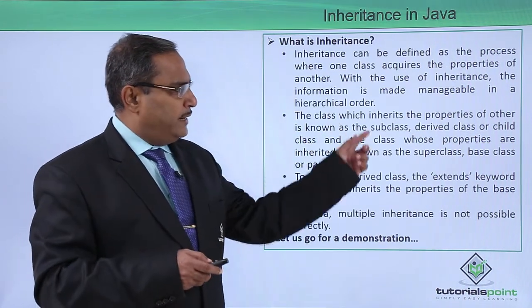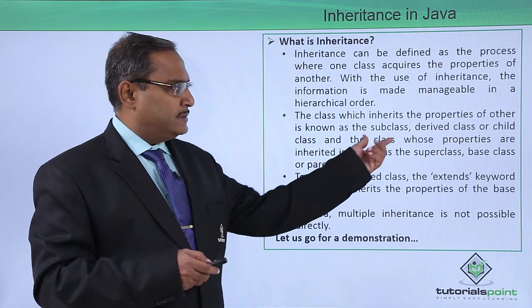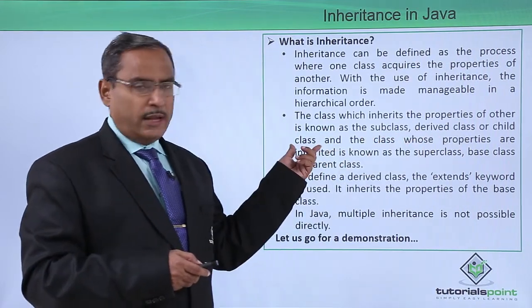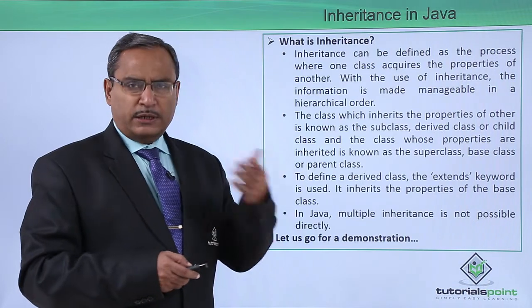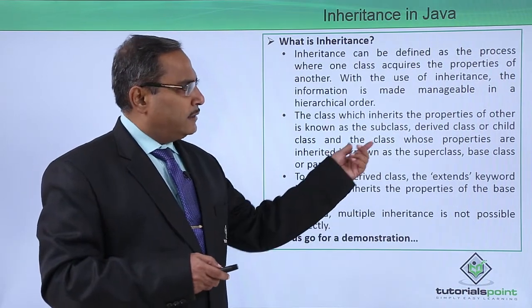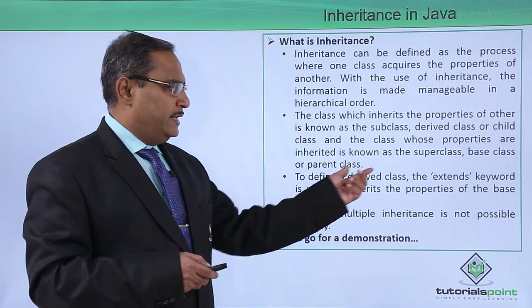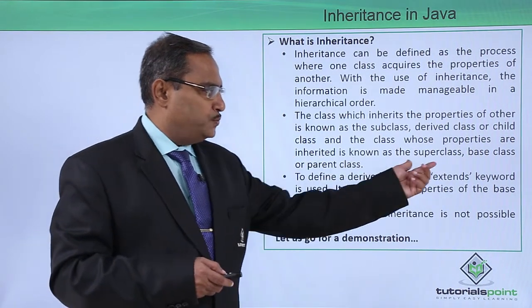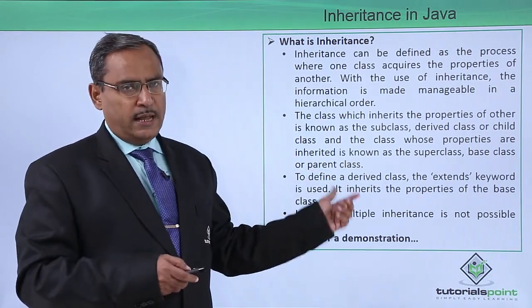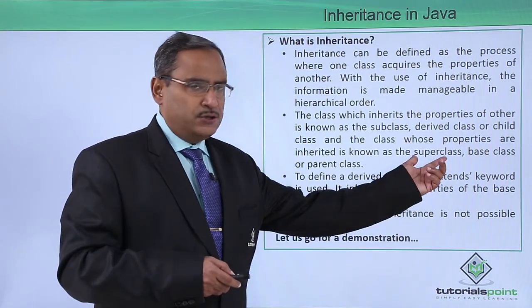The class which inherits the property of another class is known as the sub class, derived class, or child class. But in Java, we usually use the term sub class. The class whose properties are inherited is known as the super class, base class, or parent class. But in Java, we prefer to call it the super class.